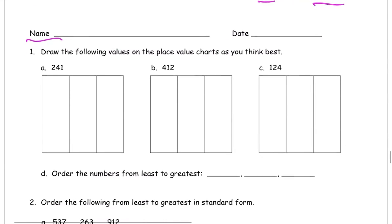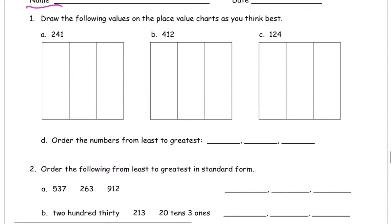So we have draw the following values on the place value charts as you think best. And the important thing about this homework is don't rush it. A lot of times second graders at this point of the year you're working with numbers that are larger than you've ever had to count before. Maybe you're starting to get used to it. Maybe you're still struggling sometimes to figure out what comes next, especially when you go over or backwards over a hundred or two hundred or three hundred or higher.